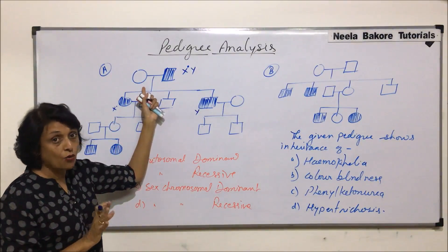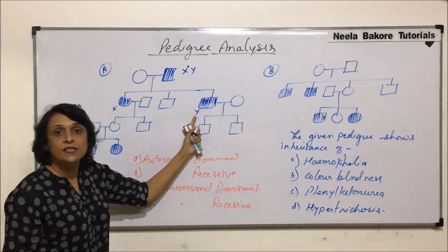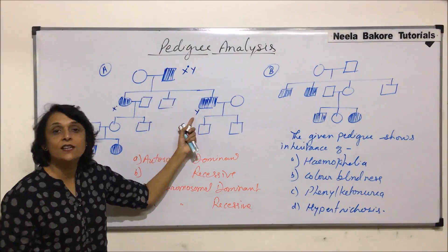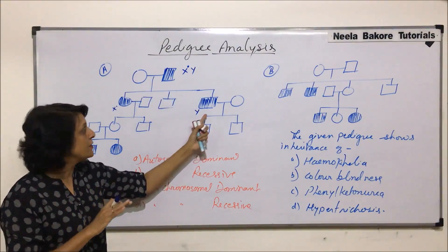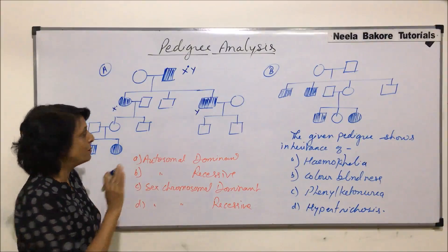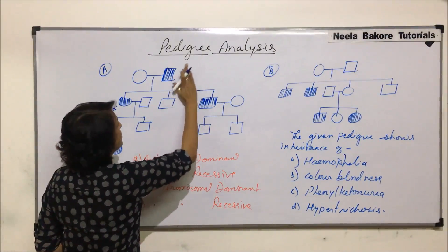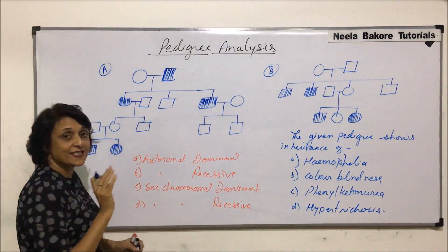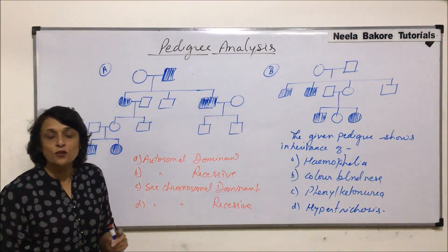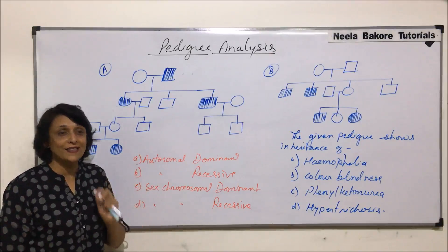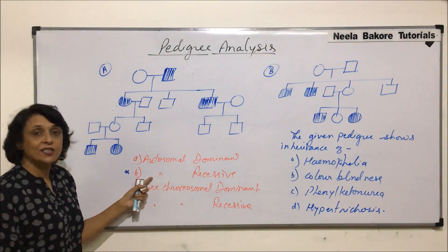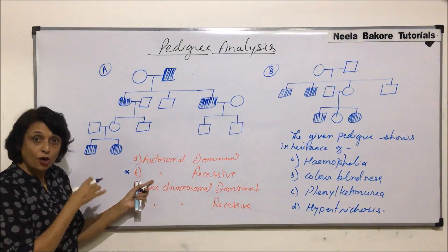The mother may be a carrier, but since she is shown as normal, we take her as normal. If the son receives Y from the father and a normal X from the mother, the child should be normal — but the child is showing the disease. Therefore it cannot be sex-linked. The easiest conclusion is that it is an autosomal recessive disorder.